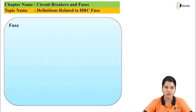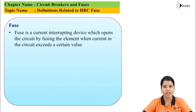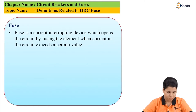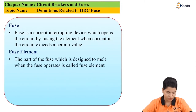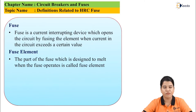The next definition is fuse. A fuse is basically a current interruption device which opens the circuit by fusing the element when the current exceeds beyond its rated value. The next definition is fuse element. The part of the fuse which is designed to melt when a fault occurs or the current exceeds beyond a set value is called as fuse element.